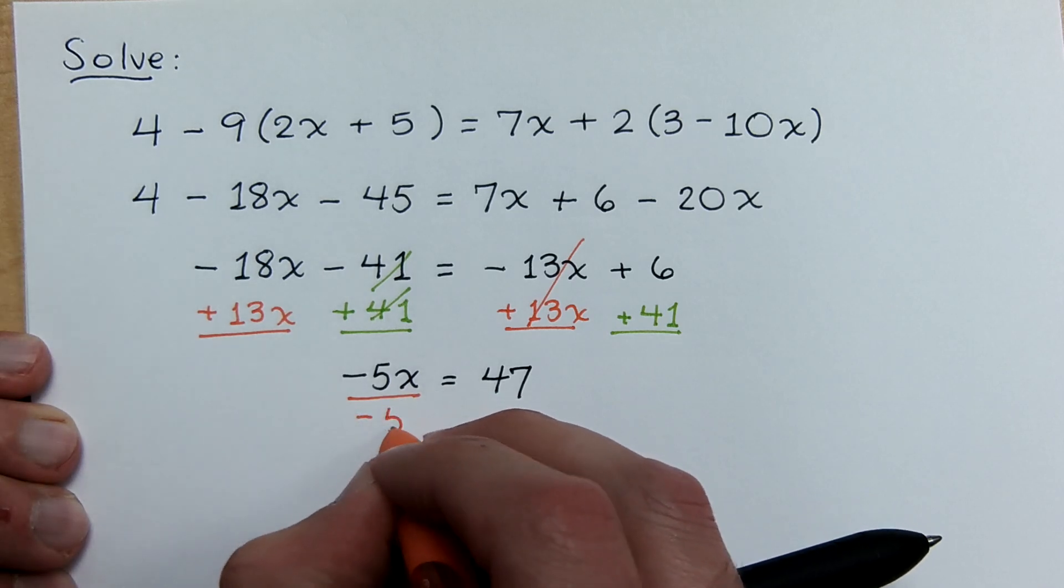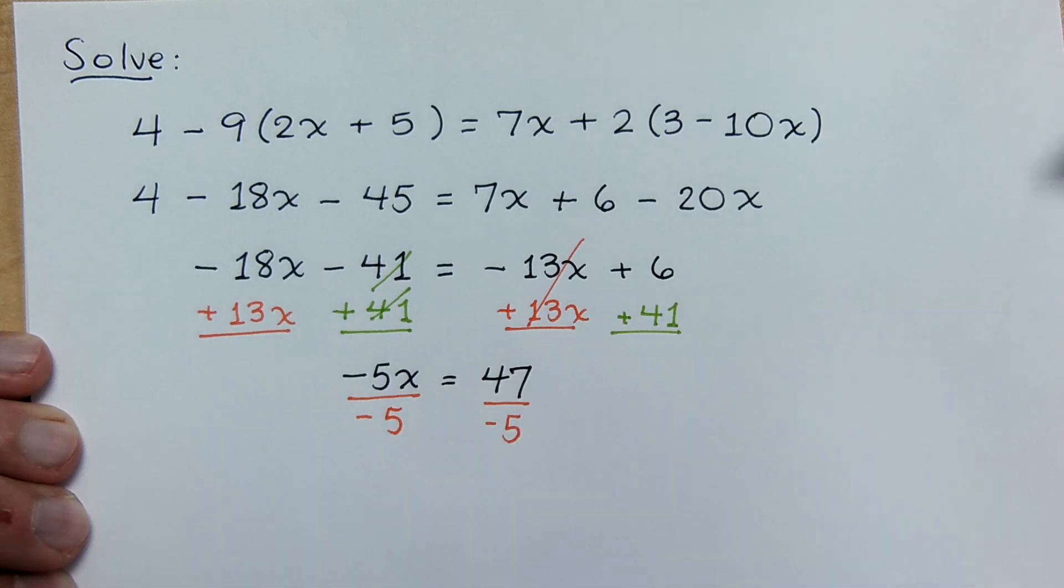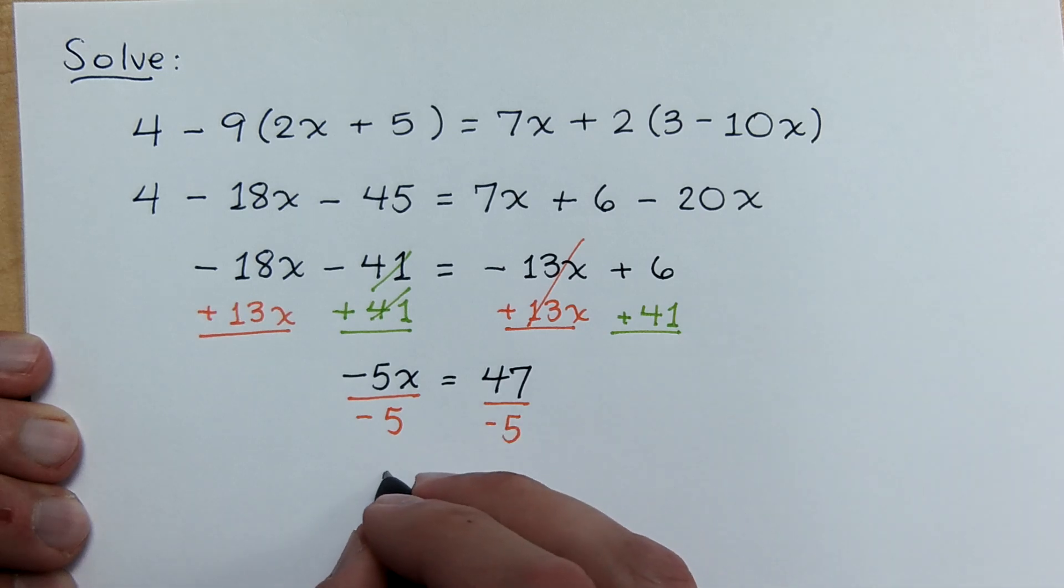See, this is why I didn't want to move the variable terms to the left. I don't like having negatives in the denominator. So let's clean this up. And x equals what?